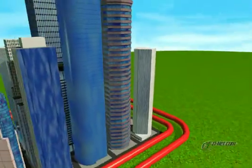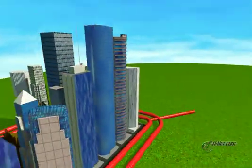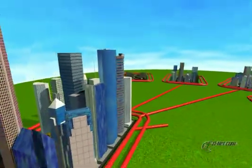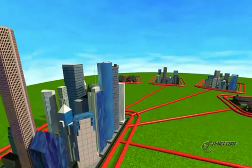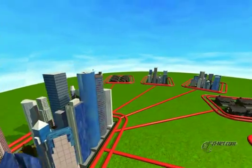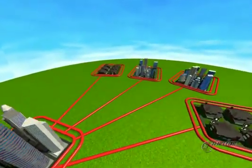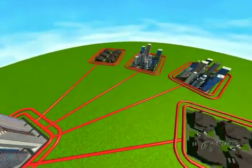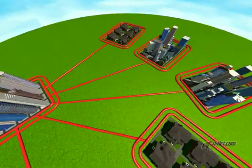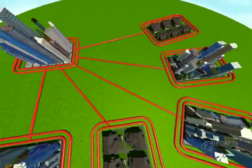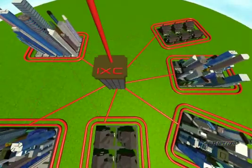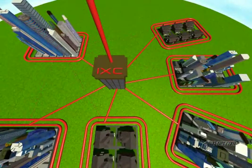Major cities often have several metropolitan area networks interconnected into a metroplex via fiber backbones. At some point, this metroplex is interconnected to inter-exchange carrier or IXC networks to traverse the country.